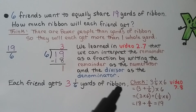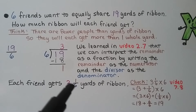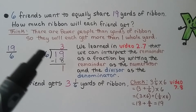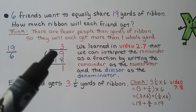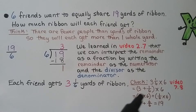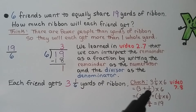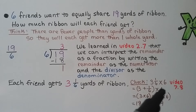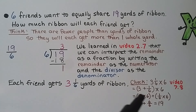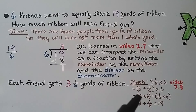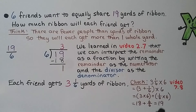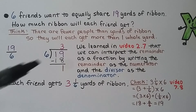We can check this by multiplying 3 and 1 sixth times 6. Using the distributive property, we break it apart: 3 plus 1 sixth, times 6 equals 3 times 6 plus 1 sixth times 6. That gives us 18 plus 1 whole, which equals 19 — our original dividend. So we did it correctly.